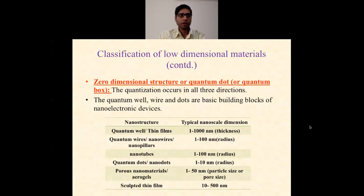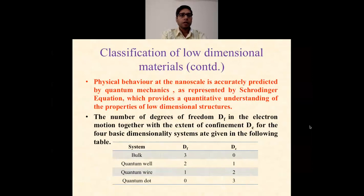These are some examples in which you can understand the size of different nanoscale systems: quantum wells, 1 to 1000 nanometers; quantum wires, 1 to 100 nanometers; nanotubes, 1 to 100 nanometers; quantum dots, 1 to 10 nanometers; and thin films, 10 to 500 nanometers.